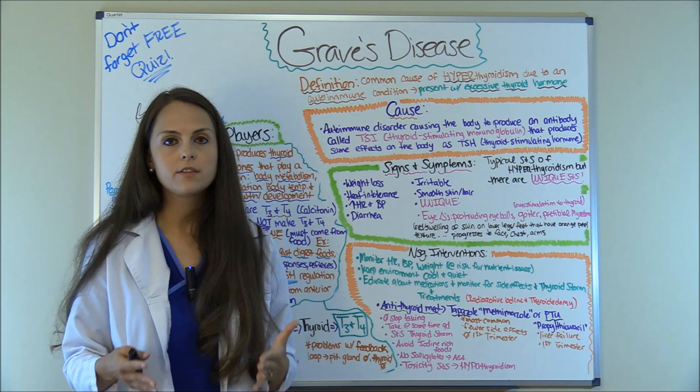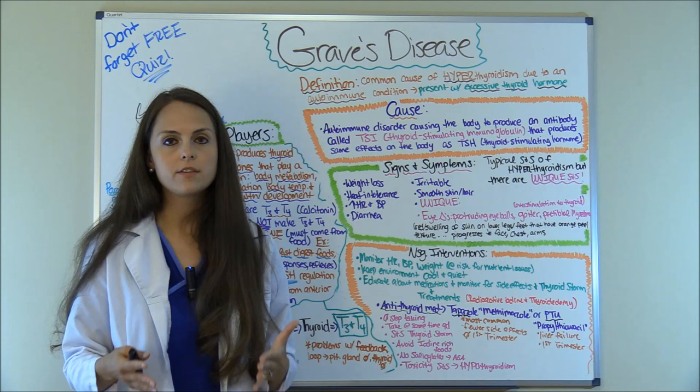Another thing you need to watch for with these antithyroid hormones — not common side effects, but they can happen, and especially what they love to ask you on tests — is agranulocytosis or thrombocytopenia. So if you see those options, that is a side effect of these medications. As a nurse, you're always educating your patient about medications they're taking, so what are some education pieces with the antithyroid hormone medicines?